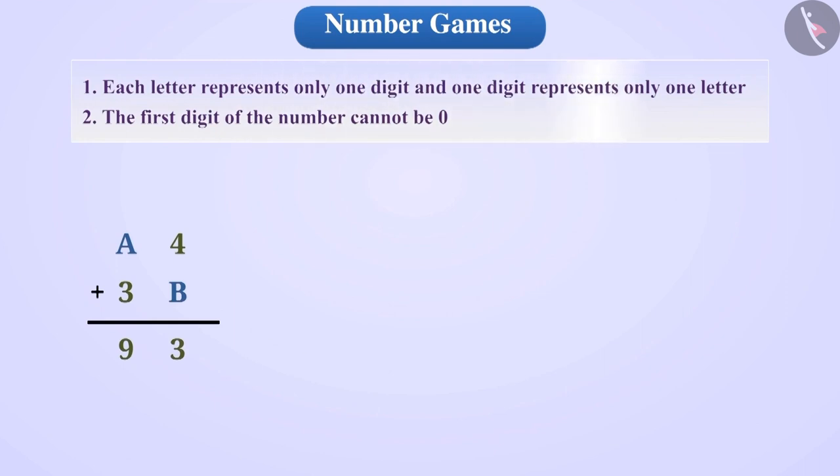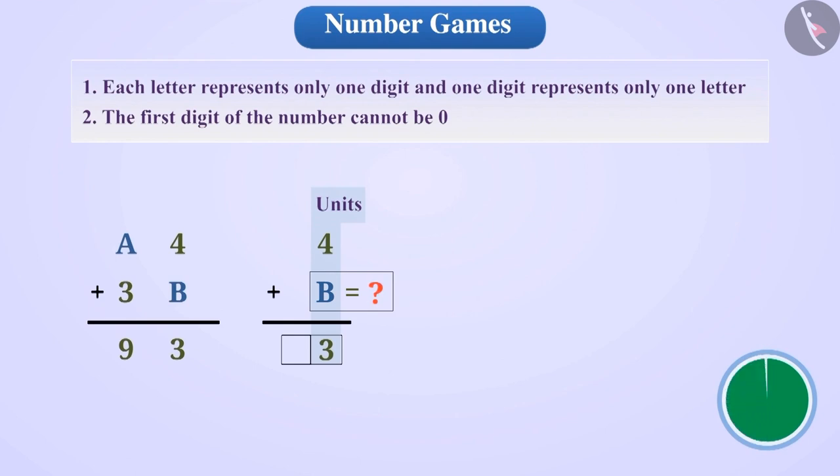Let us solve the given puzzle with the help of these rules. We see that the sum of 4 and B is a number that has 3 in its units place. So, can you guess what will be the value of B? Think for a while. Let me tell you.